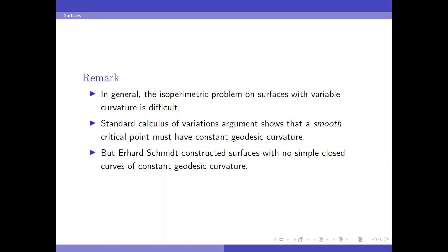Let me make some remarks. In general, the isoperimetric problem on surfaces with variable curvature is difficult. The standard calculus of variations argument still applies. And we know that a smooth critical point of the isoperimetric problem must have constant geodesic curvature. But the German mathematician Erhard Schmidt constructed surfaces with no simple closed curve of constant geodesic curvature. So this problem can be subtle.